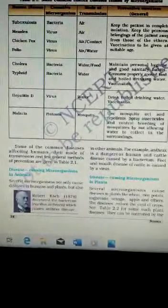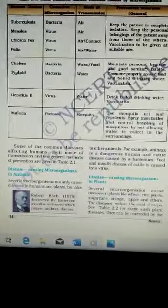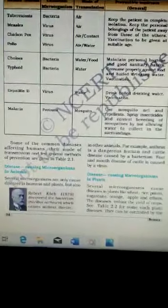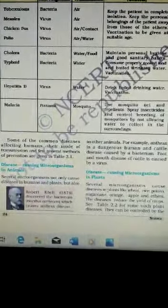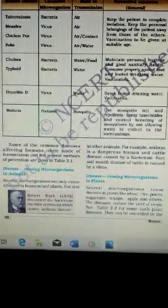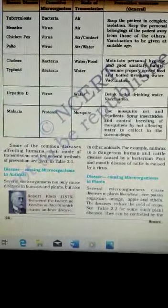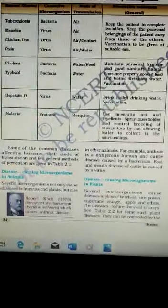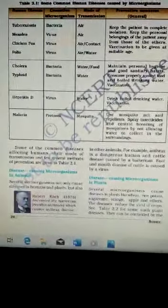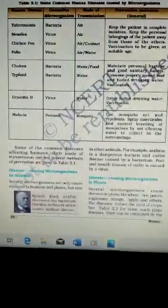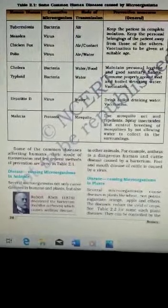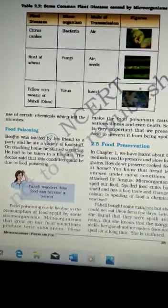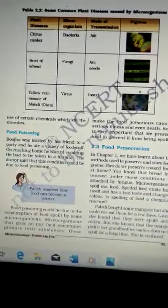The next is disease-causing microorganisms in plants. Several microorganisms cause disease in plants like wheat, rice, potatoes, sugarcane, orange, apple and others. The diseases reduce the yield of crop. You can see in table 2.2 for some such plant diseases. They can be controlled by the use of certain chemicals which kill the microbes.